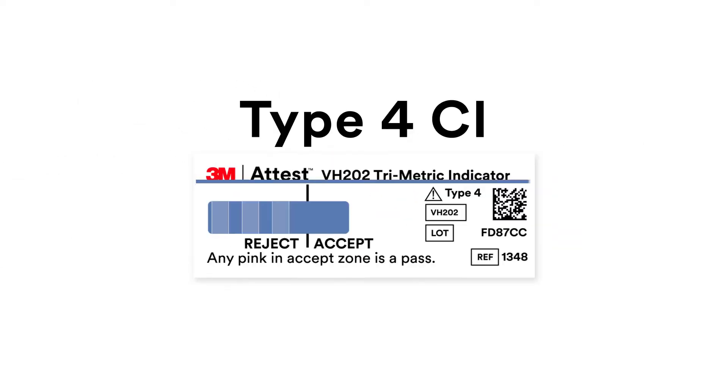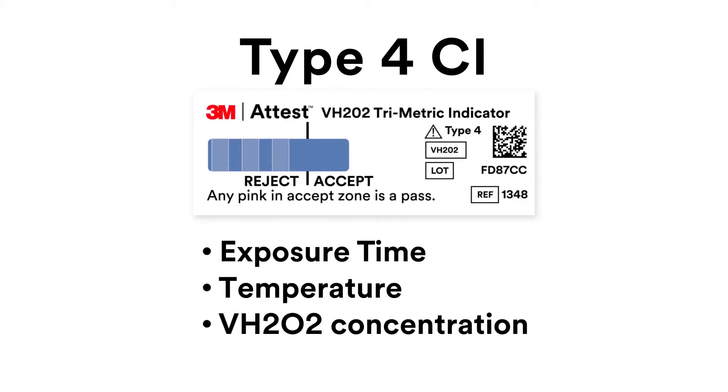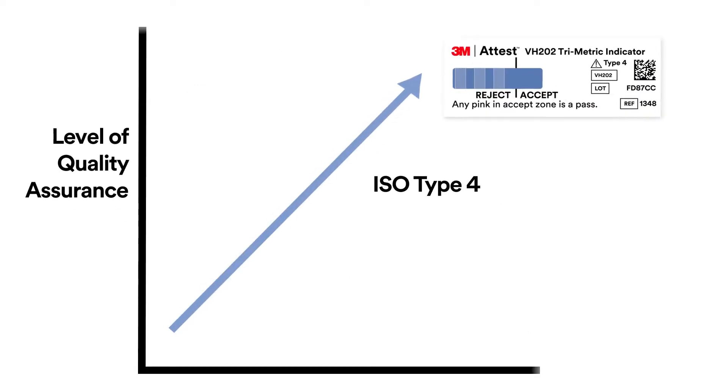The 3M ATEST vaporized hydrogen peroxide trimetric chemical indicator 1348, 1348E is a Type 4 VH202 indicator and measures the three critical variables of exposure time, temperature, and VH202 concentration. Offering a higher level of quality assurance monitoring versus a Type 1 indicator when used as an internal pack monitor.